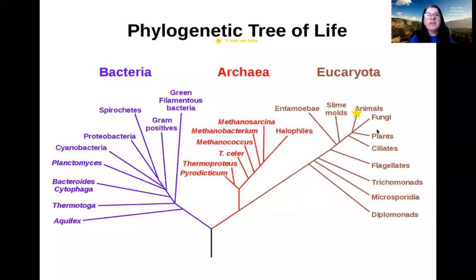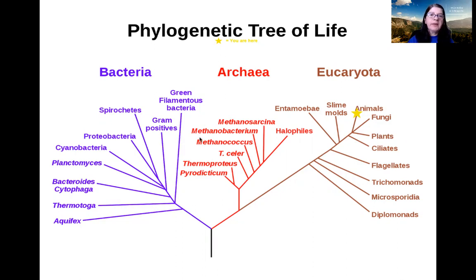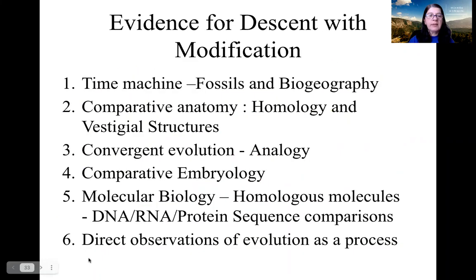Welcome to AP BioFund with Dr. D. This is our second installment on the theory of evolution, and today we're going to be discussing the evidence for it. I'm starting the presentation with the tree of life as we know it. You can see where we are right here in animals — we've branched off from archaea and bacteria. Archaea is the ancient bacteria, and bacteria here is the common everyday bacteria we know. So let's dive right into it.